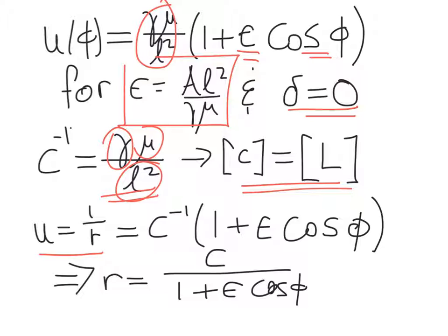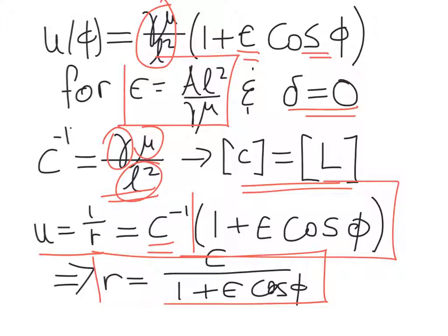And so then we get a solution for u, which is 1 over r. That's c to the minus 1 times 1 plus epsilon cos phi. And then solving for r, what we find is that r as a function of phi is c over 1 plus epsilon cosine phi.